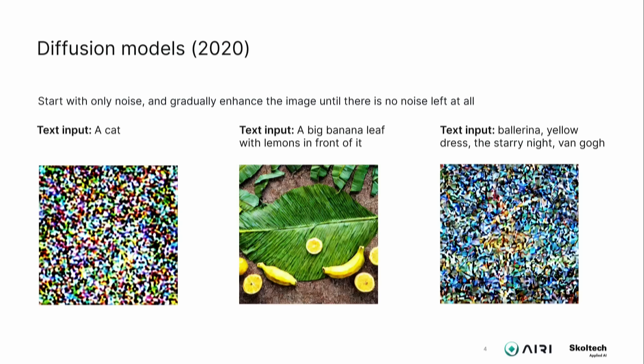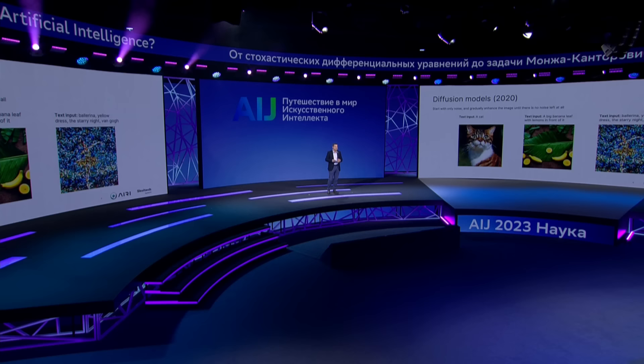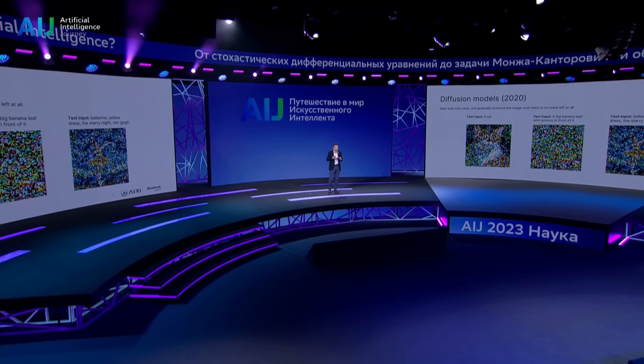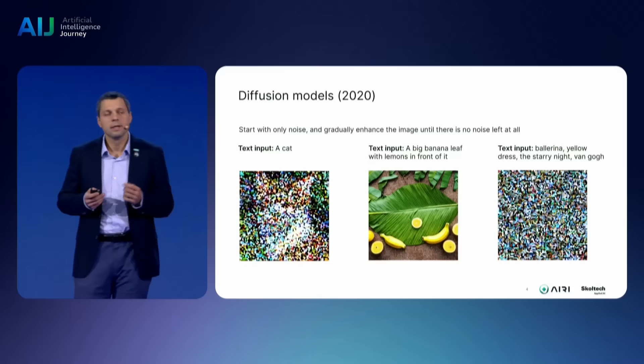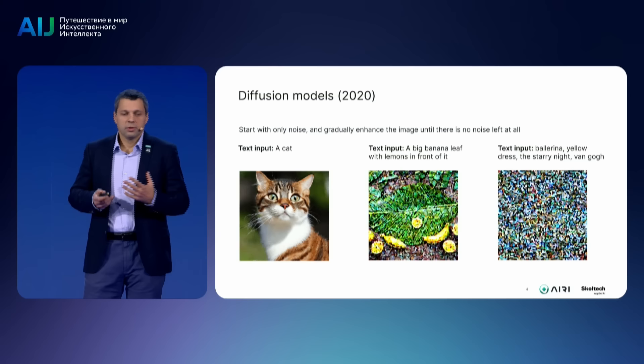The next milestone in their development was a diffusion model, which also allows generating new images, so it has a certain degree of creativity. On the slide you can see a special adversarial process and a model that out of white noise generates an image in accordance with the text prompt or text input from a human user.